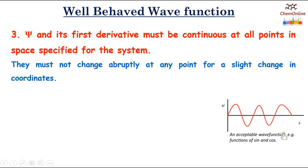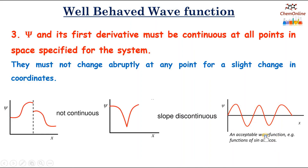This is an acceptable wave function — for example, wave functions of sine and cosine. Here you can see that the wave function is continuous; the values are changing only gradually. ψ makes no sudden jumps in its value. Whereas in these two graphs, you can see that the function is not continuous.